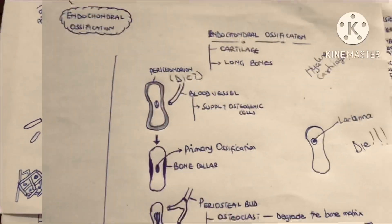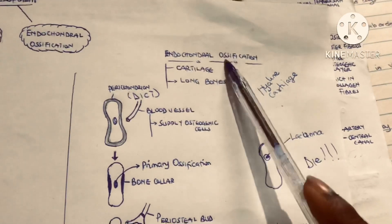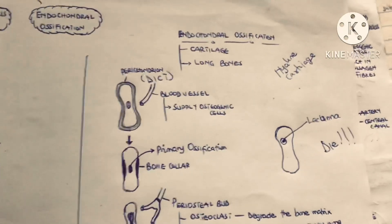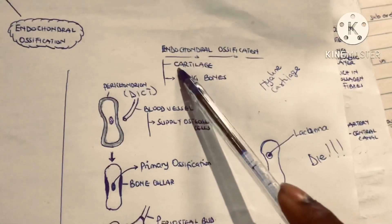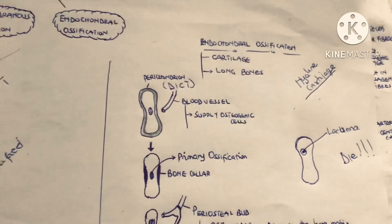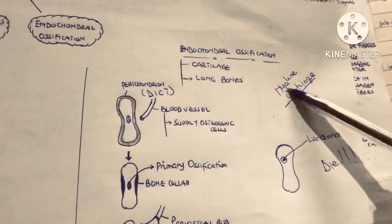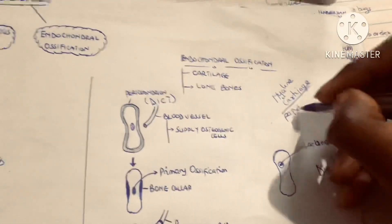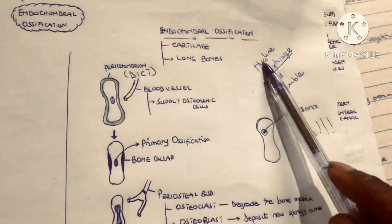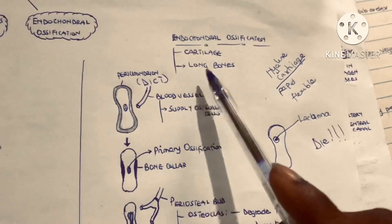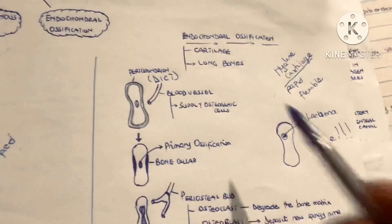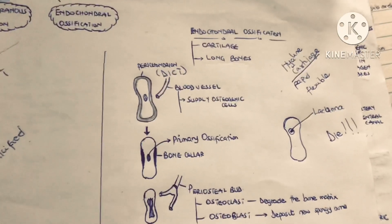Now let's look at endochondral ossification. Unlike intramembranous ossification which develops from mesenchymal stem cells, endochondral ossification develops from cartilage — specifically a hyaline cartilage. Hyaline cartilage is used because its mitosis is very rapid and it is flexible, which helps in bone development. Endochondral ossification results in the formation of long bones, except the clavicle, which undergoes intramembranous ossification.